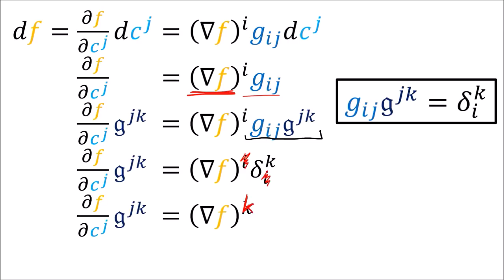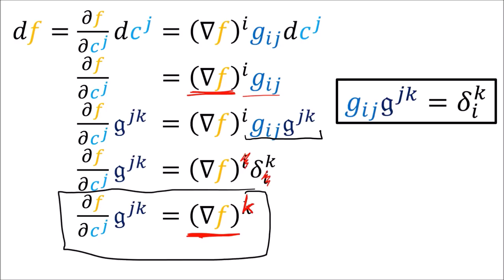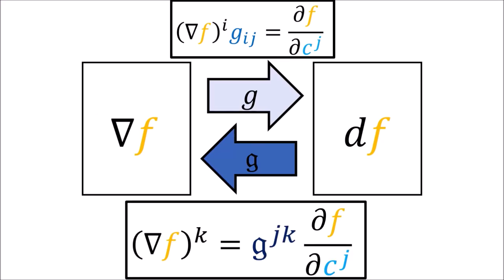We've derived a formula for the components of del f: these end up being equal to the partial derivatives summed with the components of the inverse metric tensor. So the inverse metric tensor takes us from the components of df, which are the partial derivatives, to the components of del f, the gradient of f.